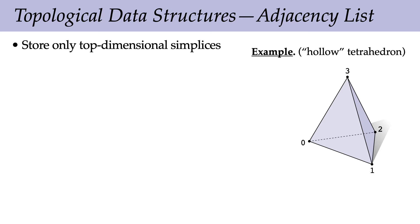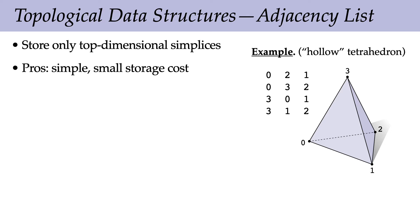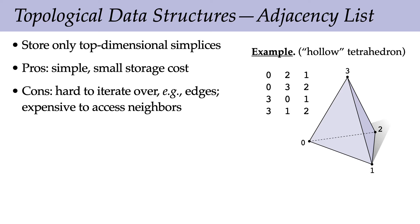Perhaps the most basic topological data structure is an adjacency list, where we just store a list of all the top-dimensional simplices. For a hollow tetrahedron — a simplicial two-complex with four triangles but no tetrahedra — we can just store the four triangles: a triangle connecting vertices 0, 2, 1; another connecting 0, 3, 2; then 3, 1, 2; and so forth. This is attractive because it's really simple and has a pretty small storage cost — we're storing the minimal amount of information needed to specify this complex.